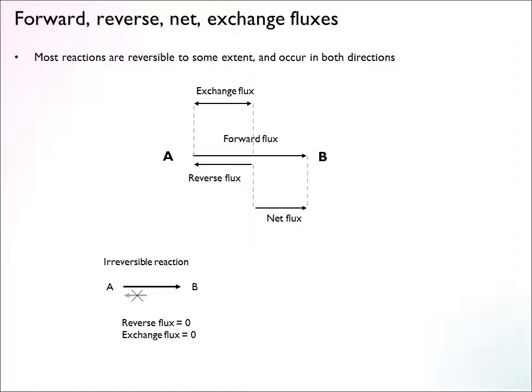A couple of situations can occur. Sometimes we have irreversible reactions, where the reverse flux is zero and therefore the exchange flux is also zero. Sometimes we have reactions close to equilibrium, meaning there is as much flux going in both forward and reverse directions, and in such cases the net flux will be zero. But usually we have a situation somewhere in between.